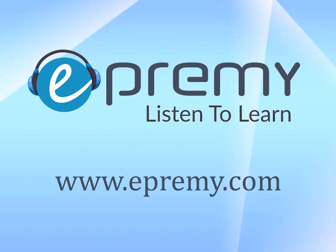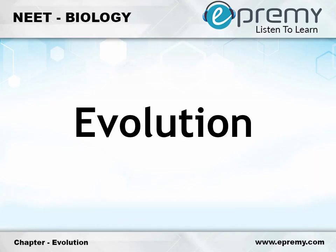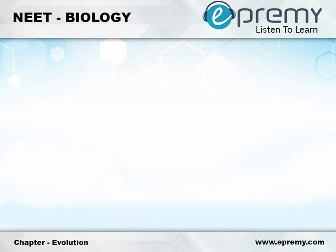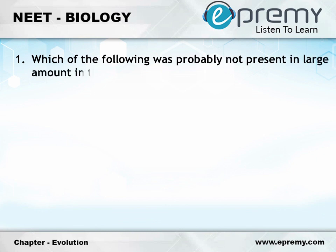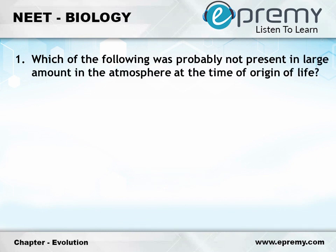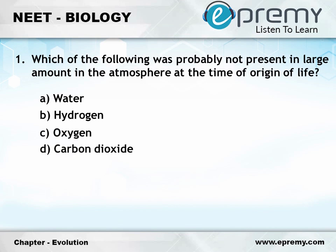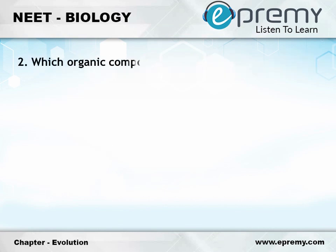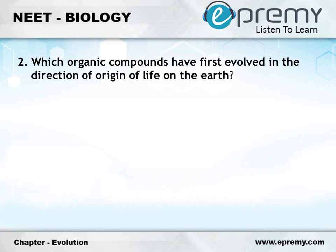This is brought to you by ePremie.com. Multiple choice questions in evolution. Question number 1: Which of the following was probably not present in large amounts in the atmosphere at the time of origin of life? Option A: Water. Option B: Hydrogen. Option C: Oxygen. Option D: Carbon Dioxide. And the answer is Option C: Oxygen.